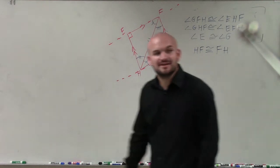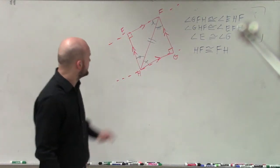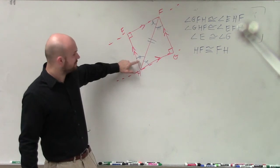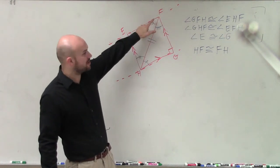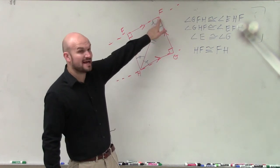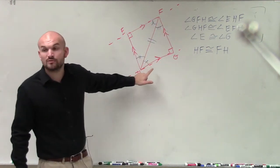Now, notice how I wrote that in different order. All right? Because H to F, notice how that started at the angle that had two tick marks and then ended at the angle that had one tick mark. Well, for this triangle, I need to follow the same direction. Start at my angle with two tick marks and end at my angle with one tick mark.